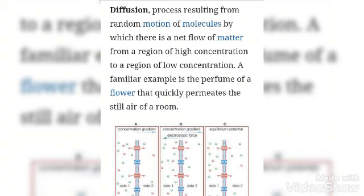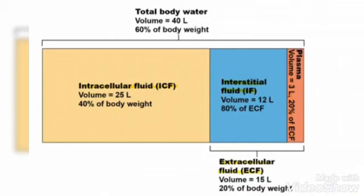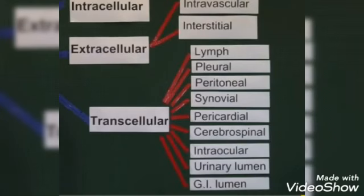Our body has a fixed criteria: in compartments — extracellular and intracellular — a fixed concentration of solvent and solutes is present, that is water and electrolytes. If their concentration goes up or down, hormones act in our body. Intracellular fluid, which is inside the cells, has two-thirds of the body's water. Extracellular fluid, outside the cells, has one-third of the body's water — 20% of body weight. Extracellular fluid is divided into interstitial fluid and plasma volume. Interstitial fluid is between the cells, and intravascular fluid is present in the vessels.